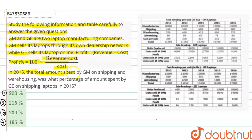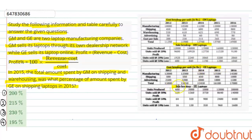In 2015, the total amount spent by GM on shipping and warehousing was what percentage of the amount spent by GE on shipping laptops in 2015? We have a cost breakup given per unit of GM laptop, sales breakup given by GM laptops, cost breakup given by GE laptops, and sales breakup given by GE laptops.